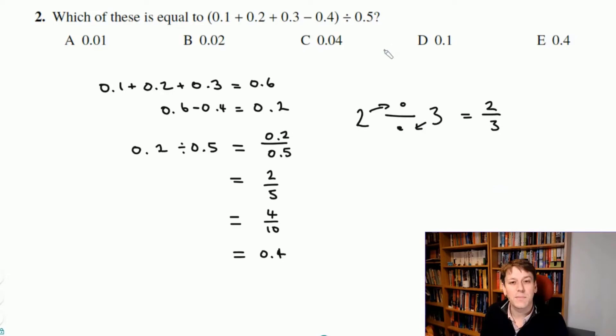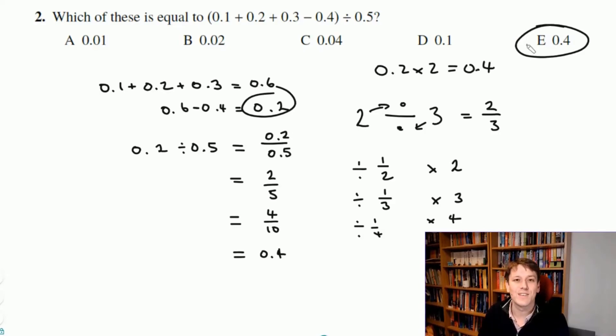The other way of thinking about dividing by a half is that it's the same as multiplying by 2. If you divide something by 1 half, that's the same as timesing it by 2. That's the same for any fraction with a 1 on top. If I divide by 1 third it's timesing by 3. If I divide by 1 quarter it's timesing by 4. So once you've got to 0.2, it's 0.2 divided by a half which is 0.2 times 2, and 0.2 times 2 is 0.4. The answer is E.